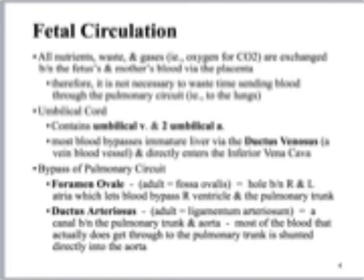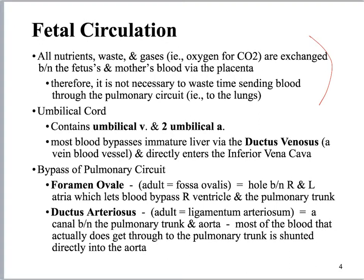Alright, note slides — we always have them, you need to memorize them. Here you've got your functions and the parts of the structures that you need to know, like the umbilical arteries and the vein which go through the umbilical cord. It bypasses the immature liver via the ductus venosus, and then on the pulmonary circuit we've got two structures. This is the hepatic circuit.